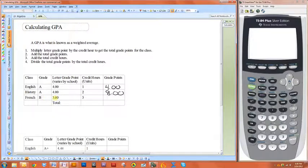Your French class, you made a B, so you have a three, and it's worth three credit hours, so you're going to get three times three, or nine grade points for that.